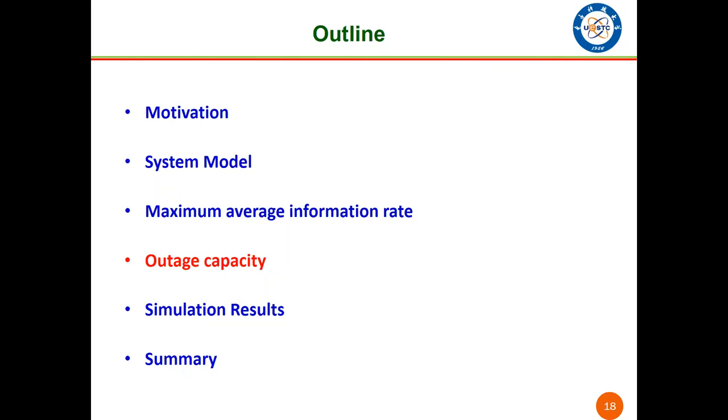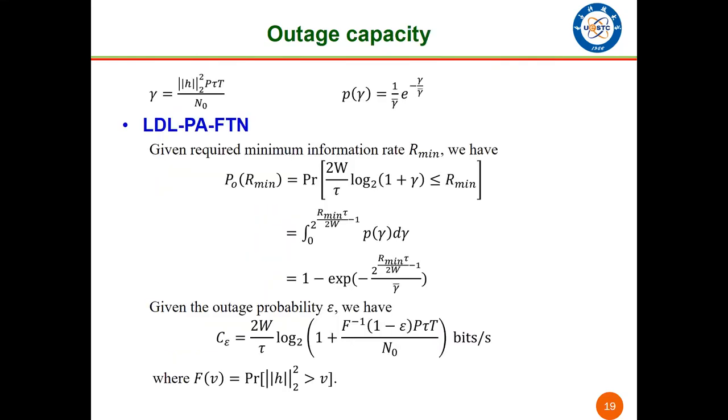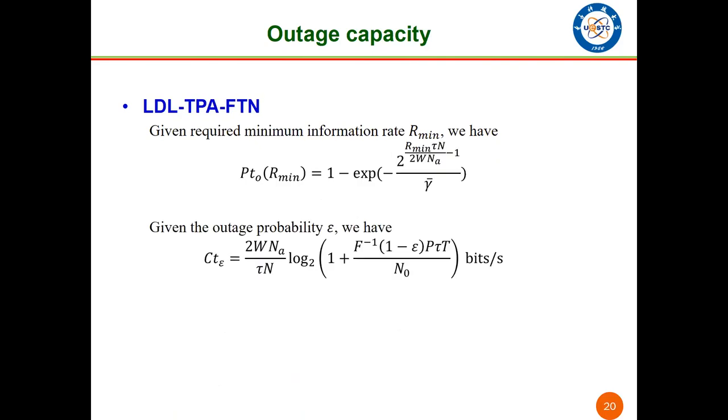Then we turn to the outage capacity. With the PDF of gamma, given the required minimum information rate R_min, we can obtain the outage probability and the corresponding outage capacity. For the LDL truncated power allocation, it's the same way.